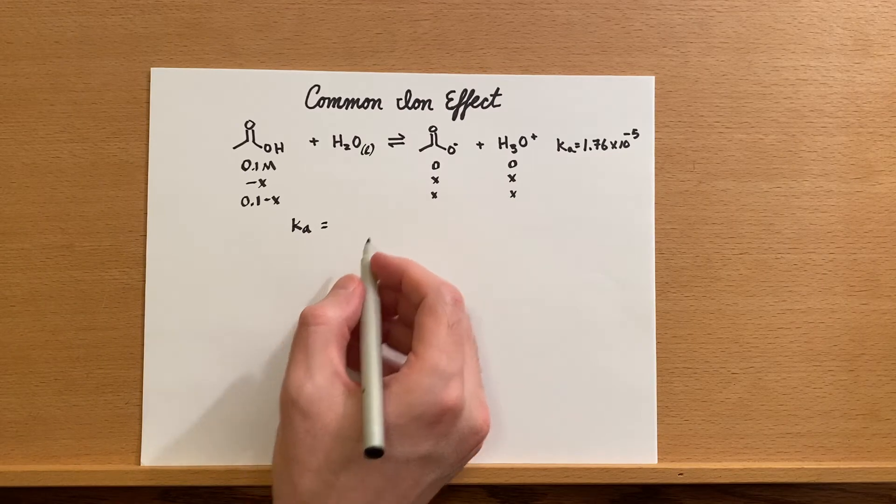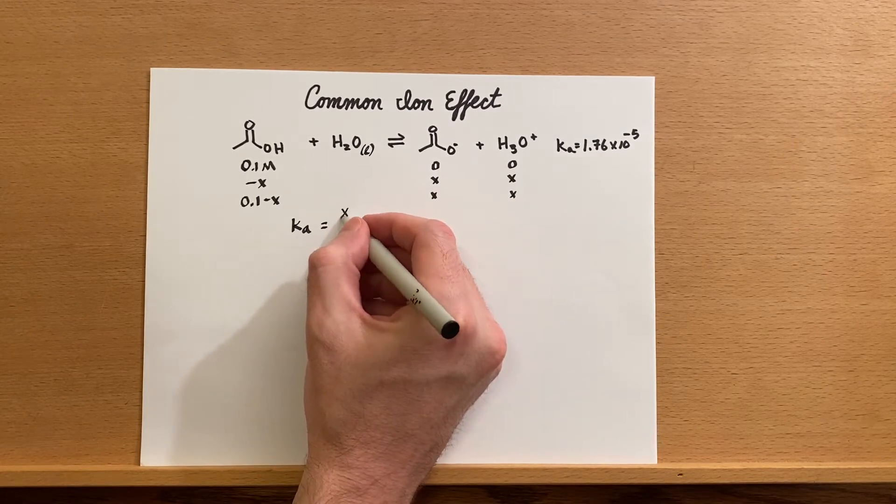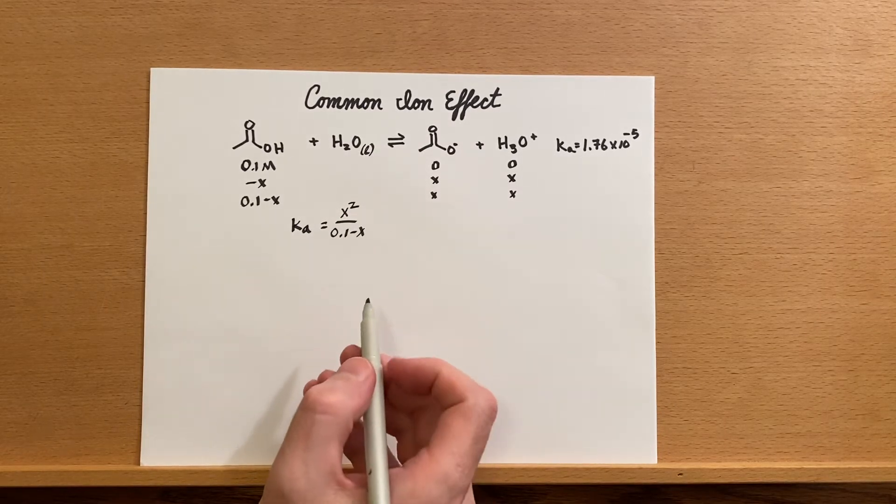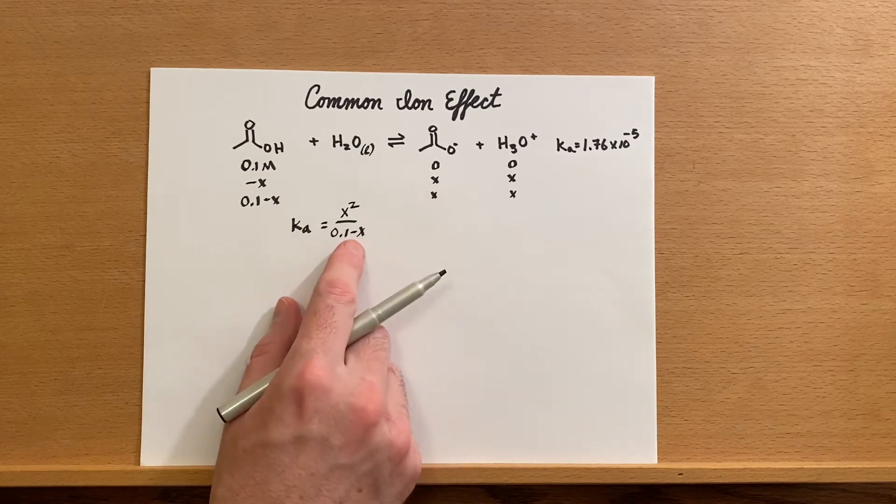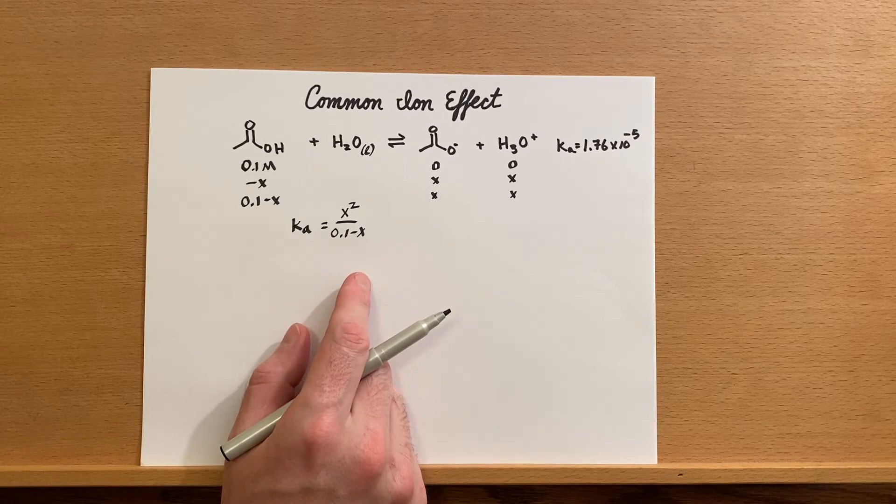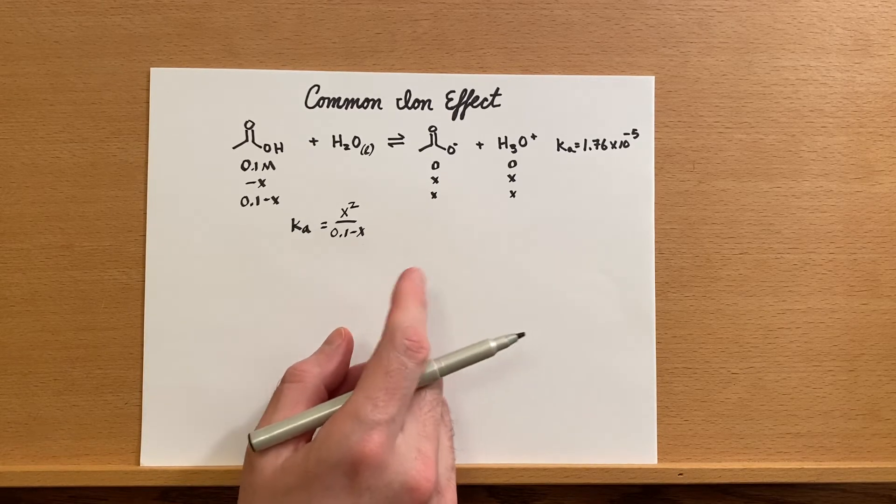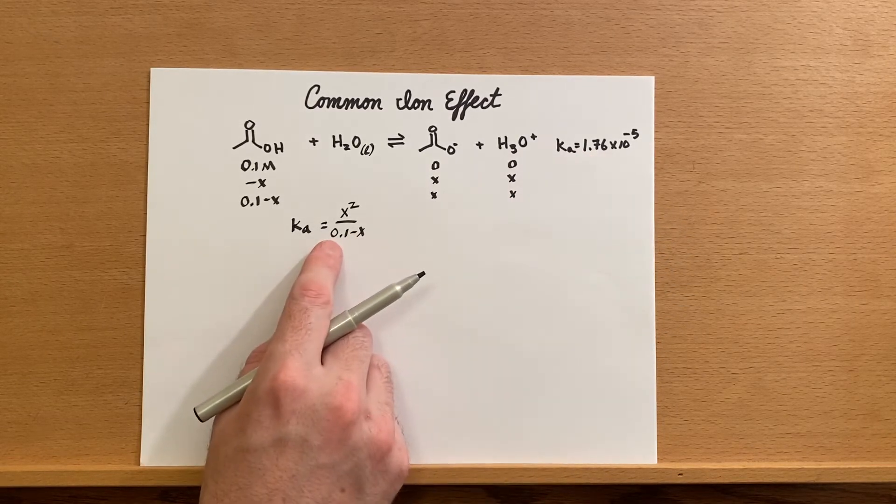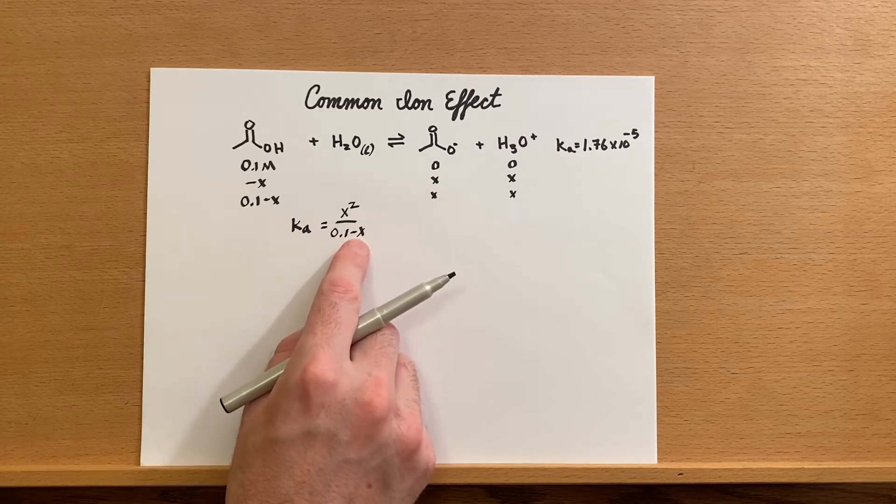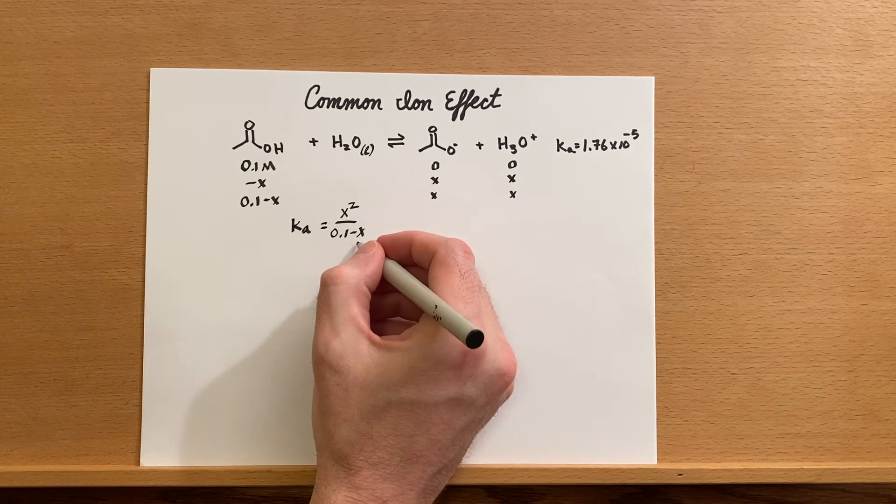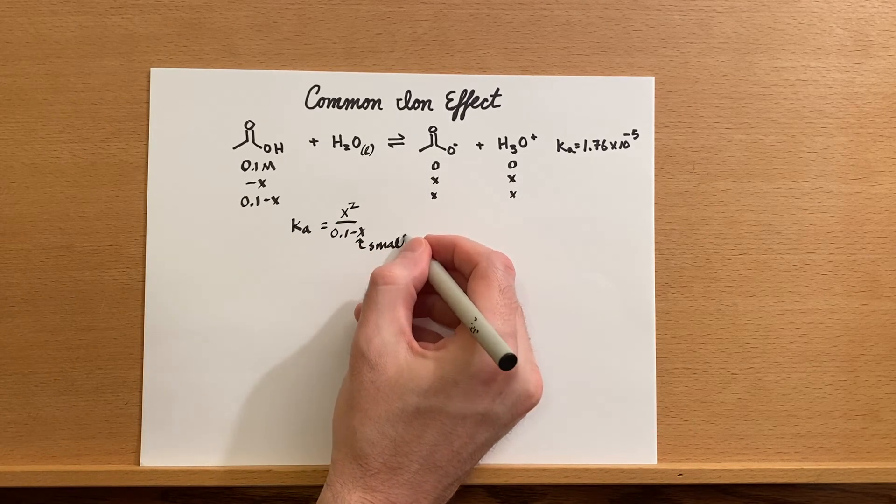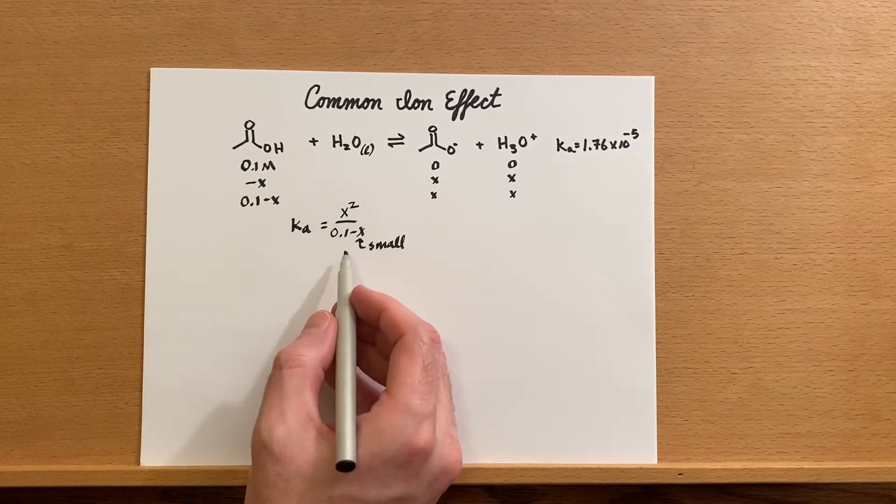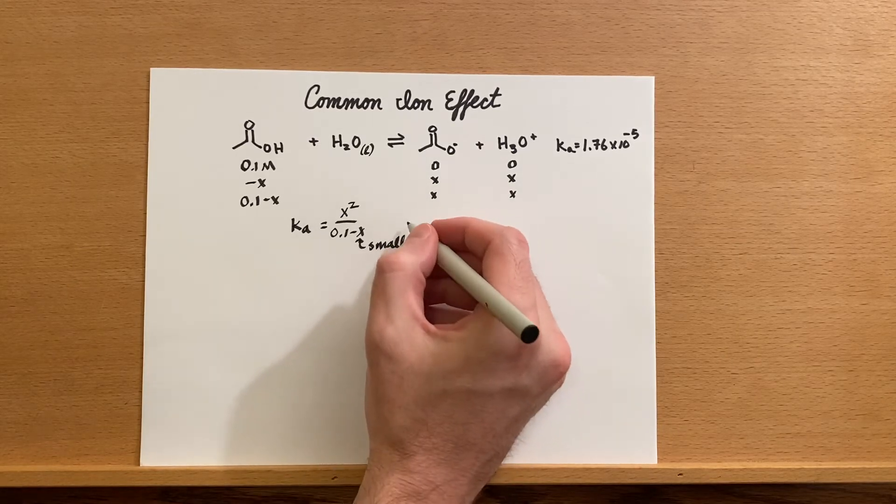Since this is review, we'll go through this fairly quickly. We realize this would be a quadratic equation if we wanted to solve it, but fortunately the K is fairly small and our concentration is large enough that we can ignore this little minus X right here because that X is going to be small and it's not going to affect our denominator that much. This will vastly simplify solving this problem.